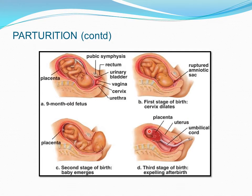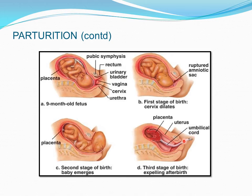The placenta — that organ formed for fetal and maternal transfer of nutrients and blood — is also pushed out through the vagina after birth. So the third stage of birth involves expelling the afterbirth: the umbilical cord is tied and cut, and the placenta is expelled.